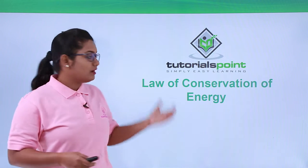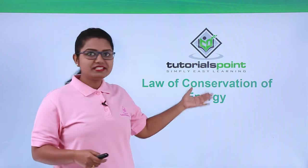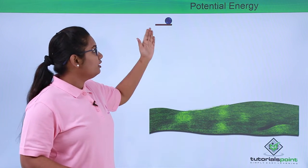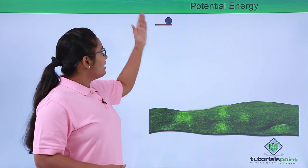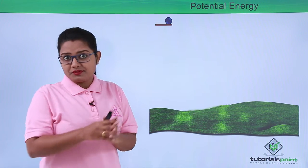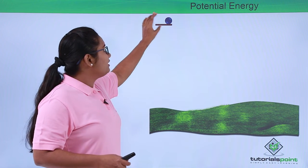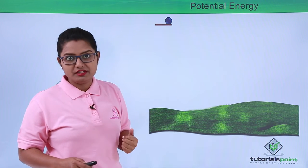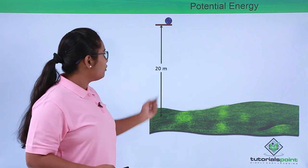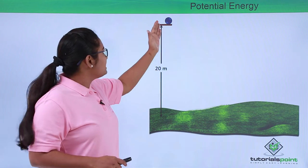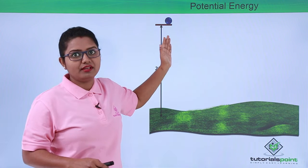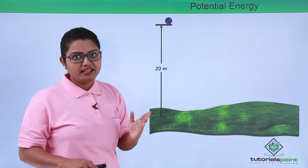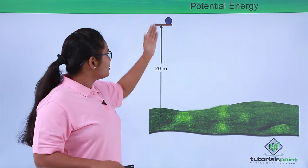Hello everyone. In this video we are going to talk about the law of conservation of energy. To understand this, let us look at the example of the falling of a ball. We have discussed in the previous video about the transformation of energy. At the point where the ball is at a certain height, it has only energy in the form of potential energy. Let's say this ball is at a height of 20 meters above the ground, and at this point it is at rest, so all the energy it has is only potential energy.